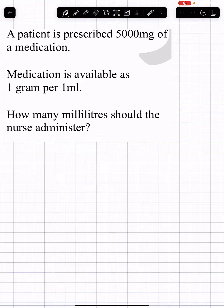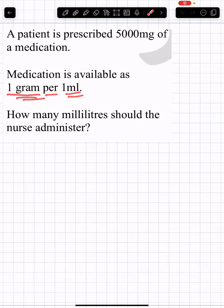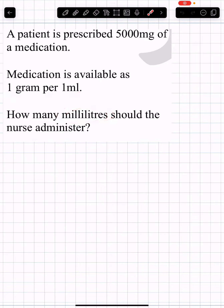A patient is prescribed 5,000 mg of a medication. The medication is available as 1 gram per 1 mL. How many milliliters should the nurse administer?